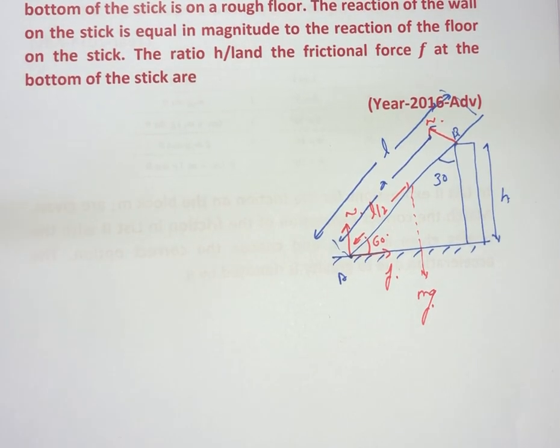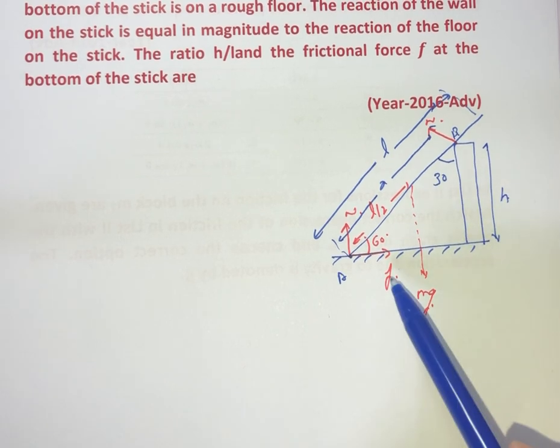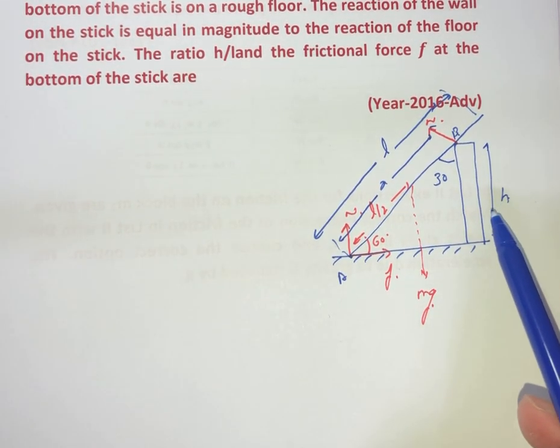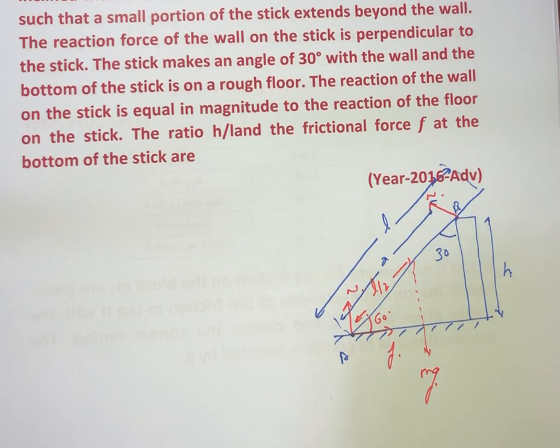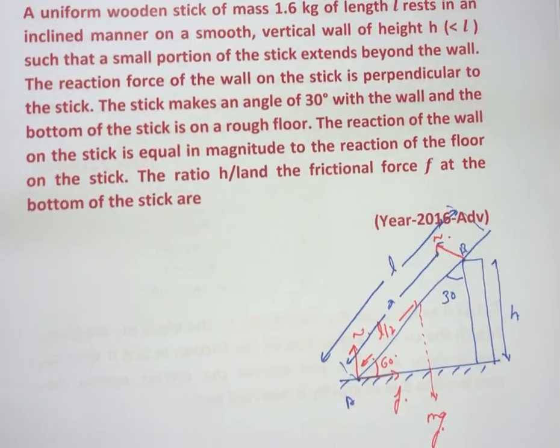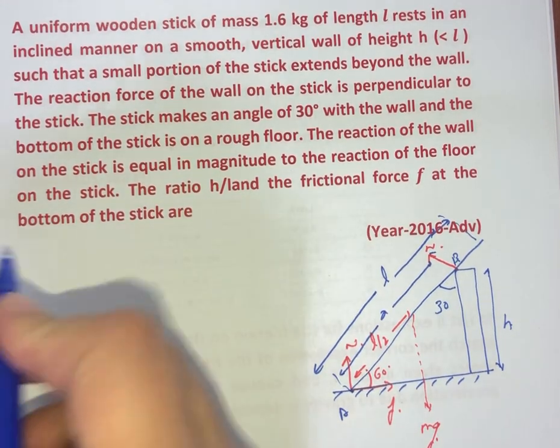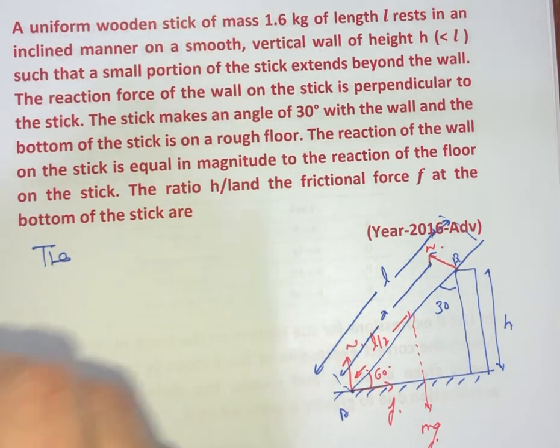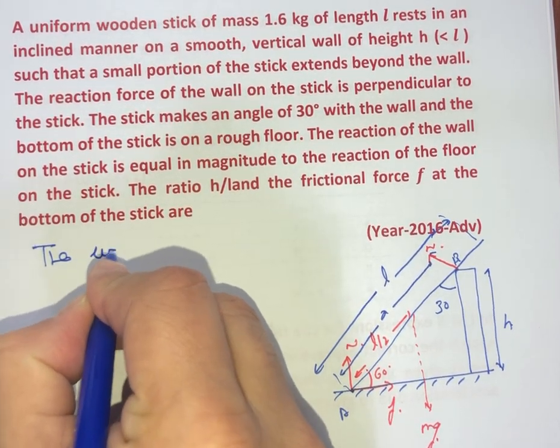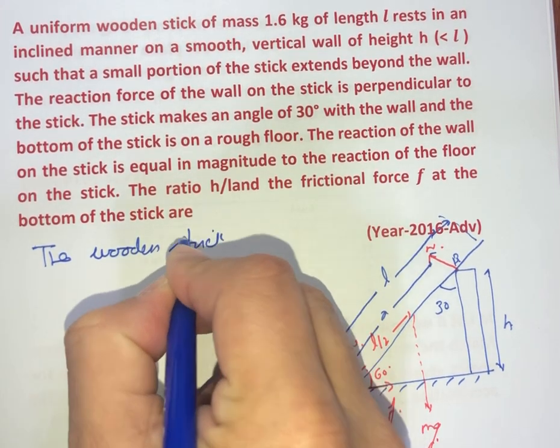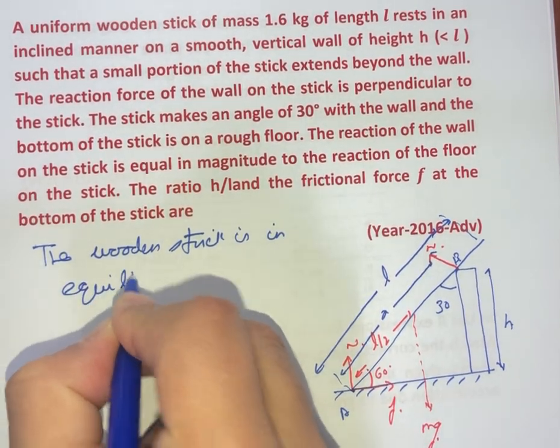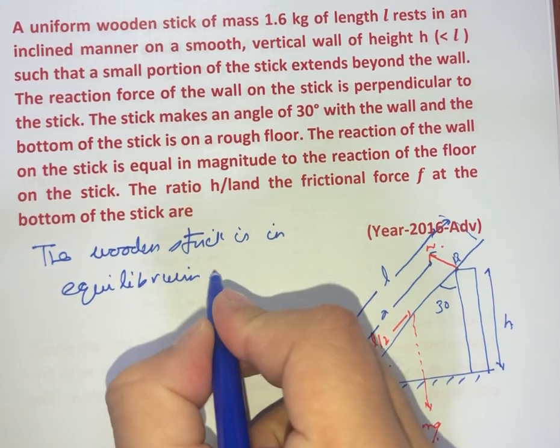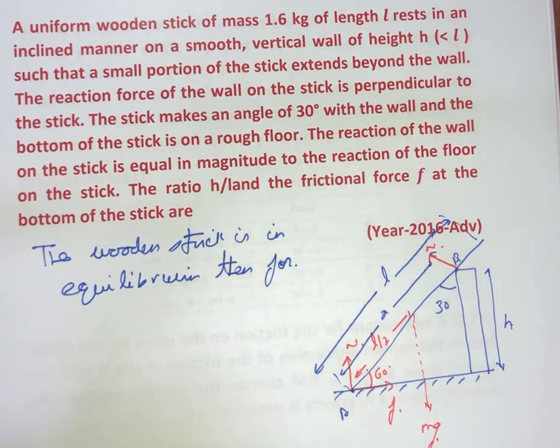This is the basic setup. And we are supposed to find out the ratio of h upon L, the total length of the stick and height of the wall, and the frictional force F. So in this case, let us say the stick is in equilibrium, or we can say the wooden stick is in equilibrium.